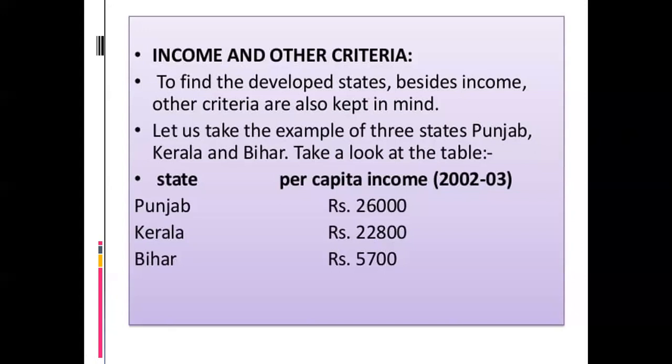Which state has the lowest per capita income? That is Bihar, with only 5,700 rupees. So it is very clear that people of Punjab earn 26,000 on average every year, whereas people of Bihar earn only 5,700 rupees. So if per capita income were used as the sole measure of development, Punjab would be considered the most developed and Bihar the least developed of the three.